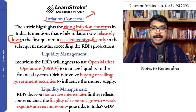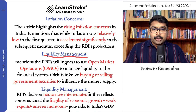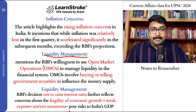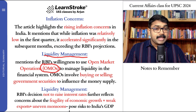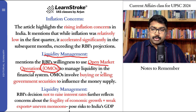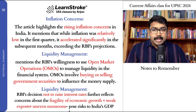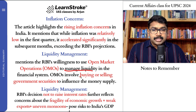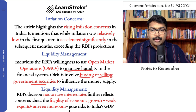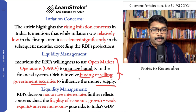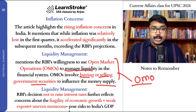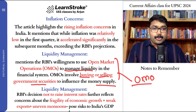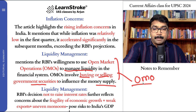Next is regarding liquidity management. The editorial also mentions RBI's willingness to use OMO. What do you mean by Open Market Operations? OMOs are basically used to manage liquidity in the financial system. It involves buying and selling of government securities to influence the money supply. Buying and selling of government securities is one way of managing liquidity by the RBI.